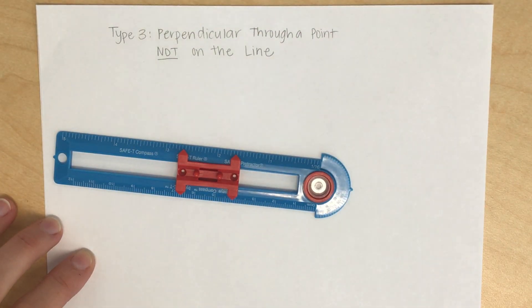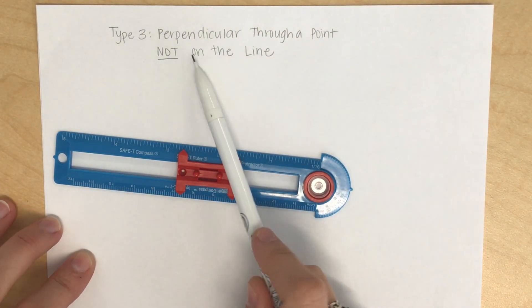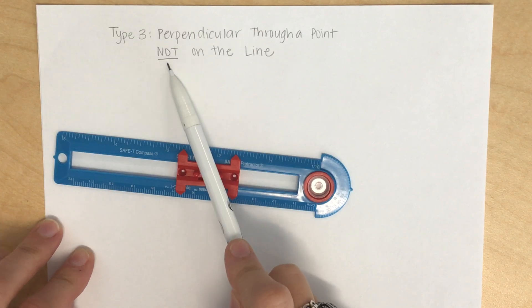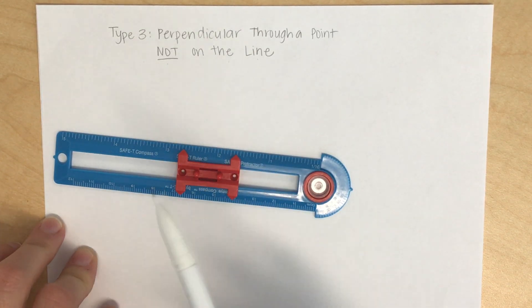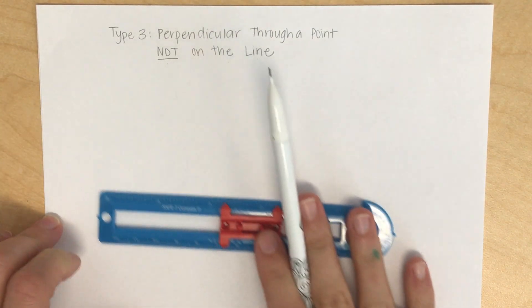My third type of construction is creating a perpendicular line that is through a point that is not on the line. So a little different than the last construction that we just did.